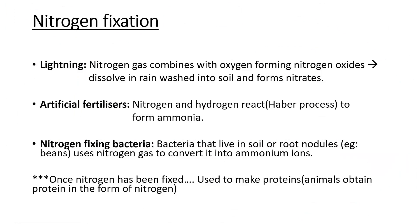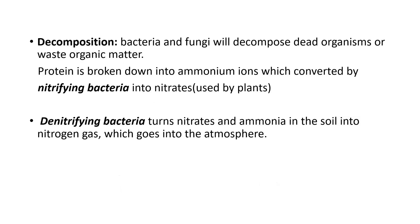Nitrogen fixation: lightning combines nitrogen gas with oxygen to form nitrogen oxide, which dissolves to form nitrates. Artificial fertilizers use nitrogen and hydrogen reacting in the Haber process to form ammonia. Nitrogen-fixing bacteria in soil or root nodules convert nitrogen gas into ammonium ions. Once nitrogen is fixed it's used to make protein, and animals obtain protein as a nitrogen source. Decomposition bacteria and fungi decompose dead organisms or waste, breaking protein into ammonium ions, which nitrifying bacteria convert into nitrates to be reused by plants. Denitrifying bacteria turns nitrates back into nitrogen gas, which leaves into the atmosphere.